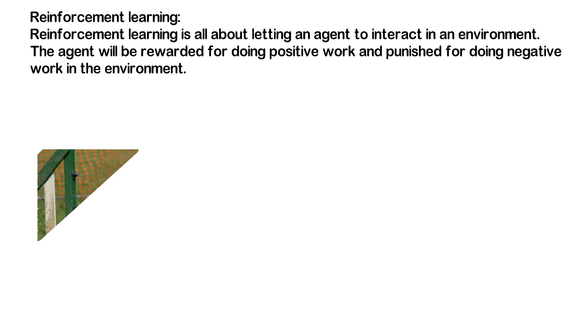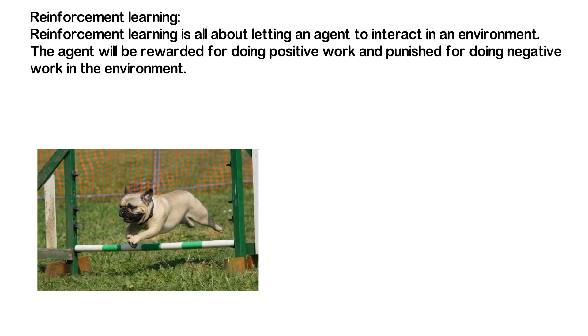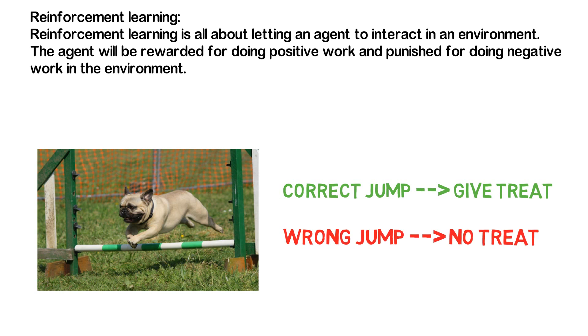Let's assume you are training your dog to do a certain trick. Whenever your dog does the trick right, you will reward it by giving some treat. If the dog does the trick wrong, you will simply punish it by not giving any treat. The dog will understand this and tries to perform the trick correctly so as to maximize the positive reward.